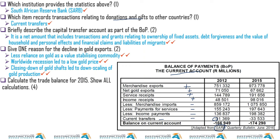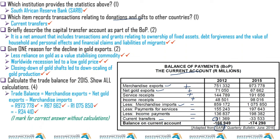To calculate the trade balance, we only use three items: merchandise exports, net gold exports, and merchandise imports. We add the first two and subtract merchandise imports — that's it. Be very careful to use the correct year; you may know which items to add and subtract but use the wrong year's figures.